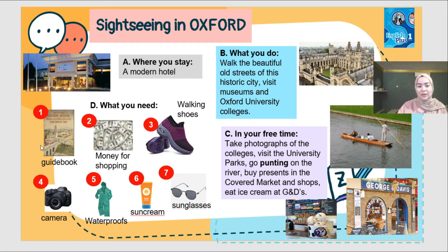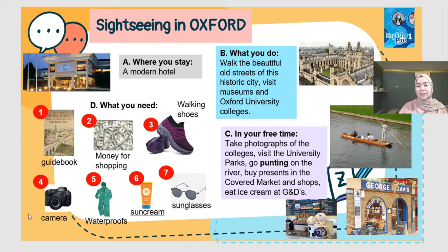D — what you need. Number 1: repeat after me — guidebook. Good job. Number 2: money for shopping. Good job. Number 3: walking shoes. Camera. Waterproofs. Suncream. Sunglasses. So basically, these are the things you will need in Oxford. You have to decide the things you need during your visit to Oxford. Bear in mind that there is no right or wrong answer — it's fully based on your preferences and your needs.